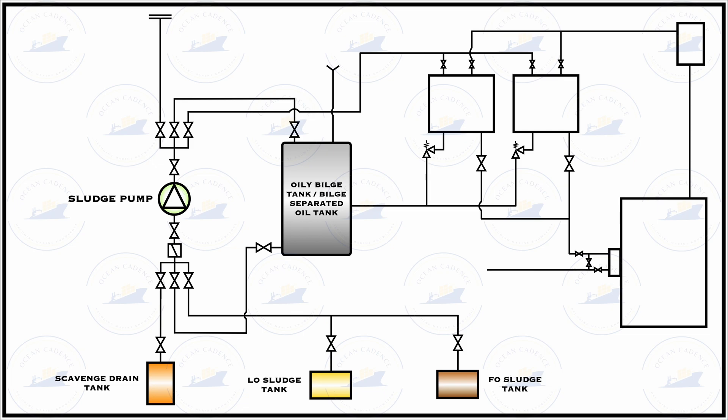The lube oil sludge tank would have a richer mixture, and running the incinerator on lube oil sludge tank content purely would give higher temperatures. The scavenge drain tanks also receive a daily amount of generation from the main engine. The BSOT is a unique tank that mostly has inlets from different collection points and save-all trays on board. For example, if a pump in the fuel oil section leaks, the oil collected in the save-all tray and naturally drained would flow through the save-all tray collection into the BSOT.